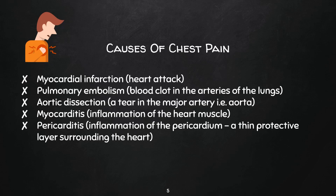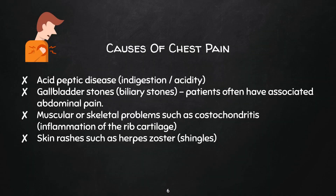Non-cardiac causes of chest pain include acid peptic disease, which is very common and can mimic cardiac pain though certain features help differentiate them. Gallbladder stones usually cause abdominal pain but can also produce chest pain via associated acidity. Musculoskeletal problems such as costochondritis — inflammation of the cartilage connecting the rib to the breastbone — are also common. One way to differentiate cardiac pain from a muscular cause is to press over the chest wall: if you have pain on pressing, it is likely, though not 100% certain, to be skeletal or muscular in origin.